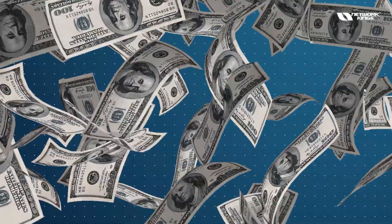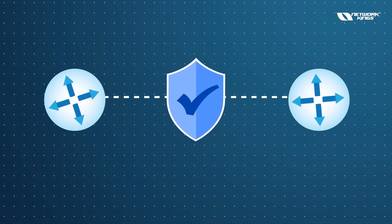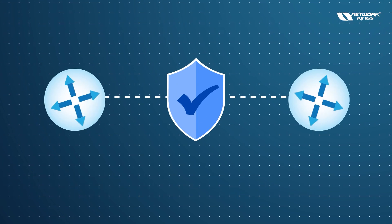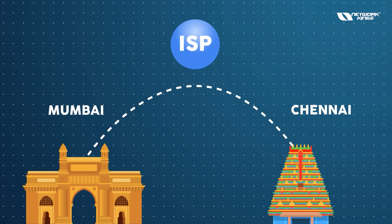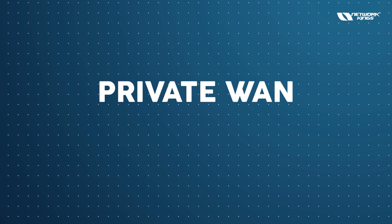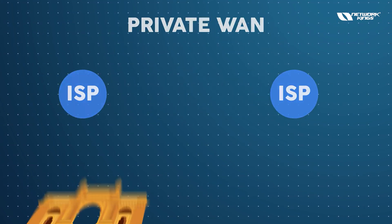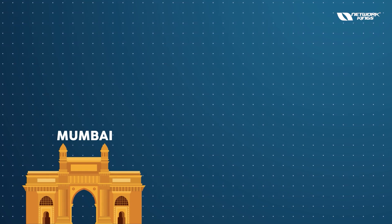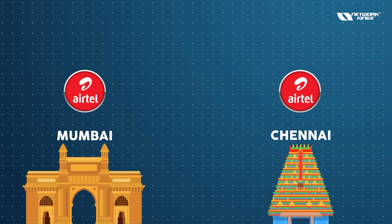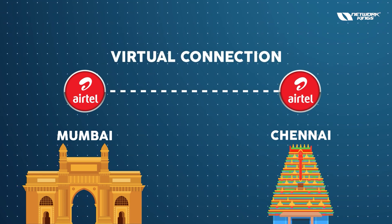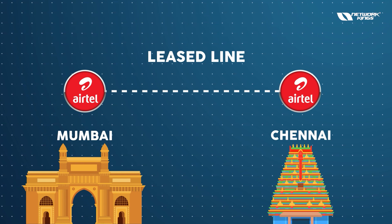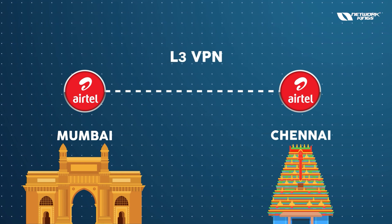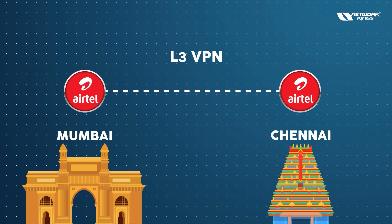When you have enough money and want a secure connection, you can use a dedicated line — that is a private WAN. However, you can't just lay your own cable between Mumbai and Chennai, so your ISP creates the connection for you. In private WAN, your ISP must be the same on both ends — for example, using ATEL in both Mumbai and Chennai — and ATEL can then create a virtual or hardware leased-line connection. There are many ISP connection types available, like MPLS, L2 VPN, and L3 VPN.